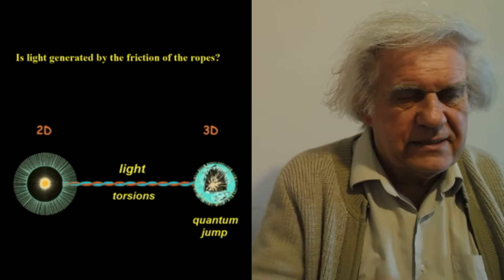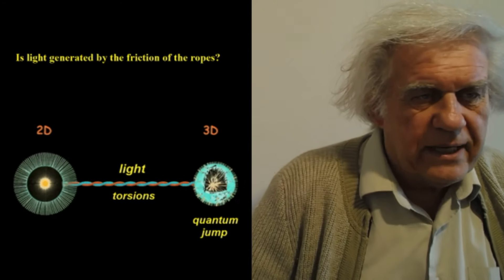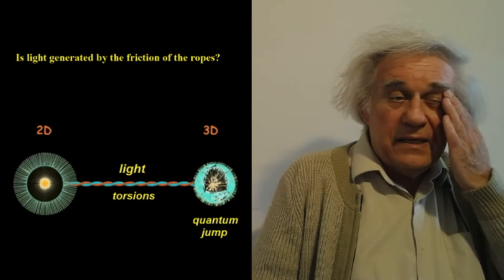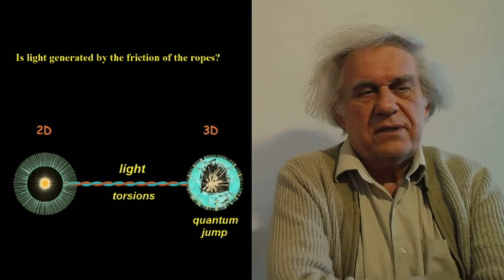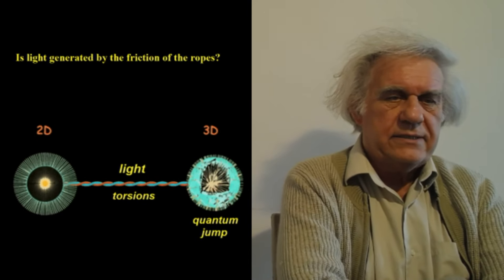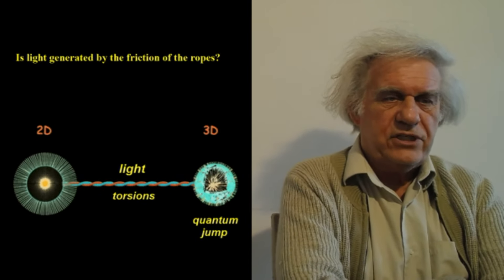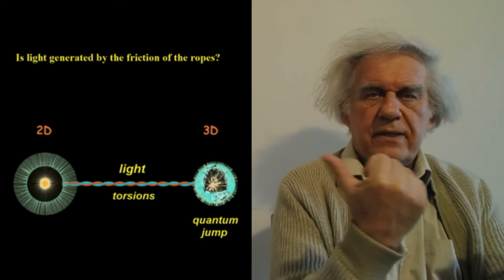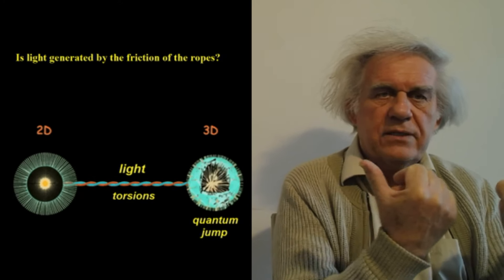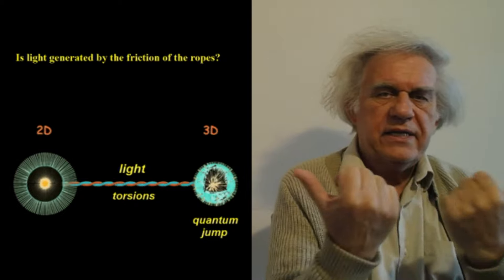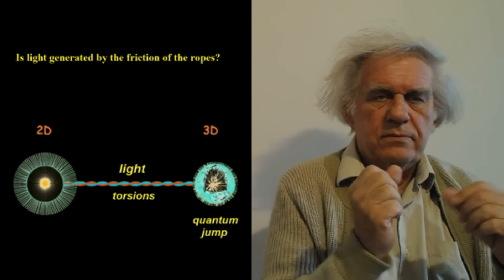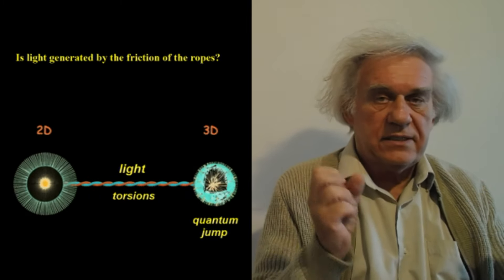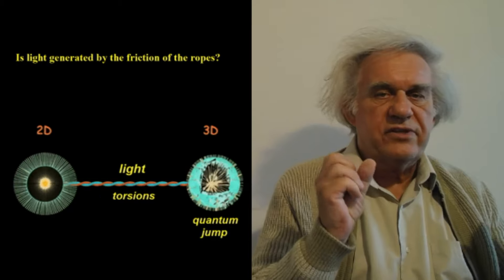Let's move on to some of the questions people made since last time. Here's comments that people made. Here's one fellow, and he says: 'Is light generated by the friction of the ropes?' It's not really the friction of the ropes. What you have there really is torsion — the in-situ torsion — and it gives a little bump to each atom, the ones that are at each end of the rope. Both atoms receive constantly and simultaneously this little thump.